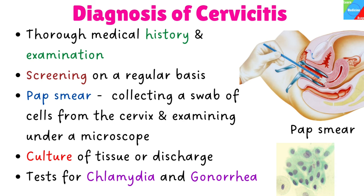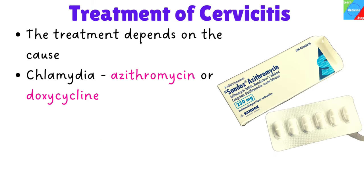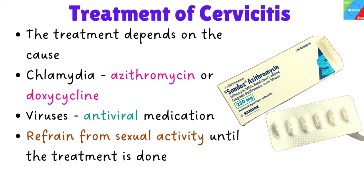The treatment depends on the cause of the inflammation. If chlamydia is the cause, antibiotic treatment with azithromycin or doxycycline is given. Antiviral medication is used if viruses are the cause of the condition. It is important to refrain from sexual activity until the treatment is done, and the partner should also be treated.